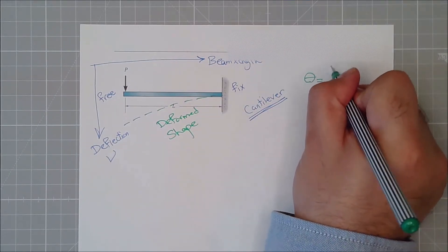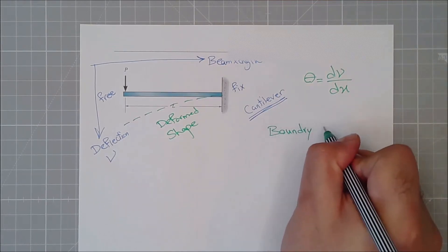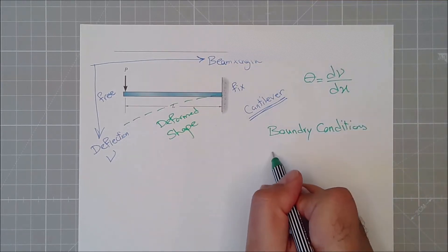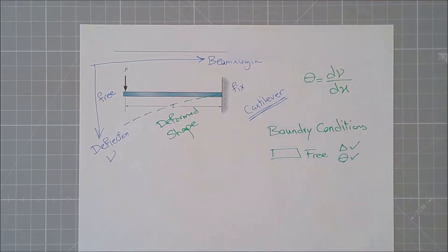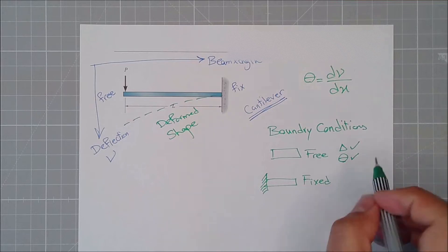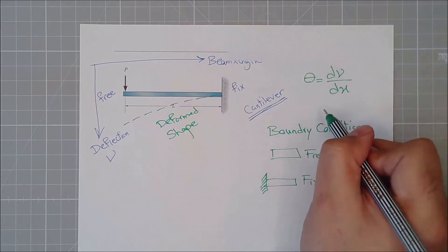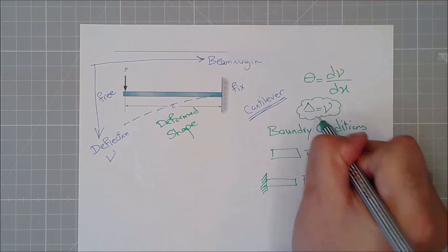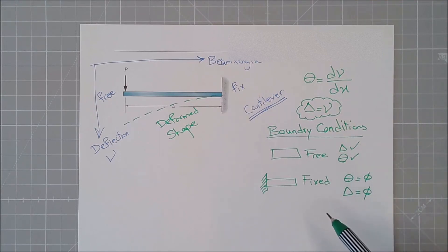Let's remember that theta is the slope, and let's write the boundary conditions. At the free end there will be deflection and slope. At the fixed end, if you remember, there won't be any slope and there won't be any deflection. Deflection and slope are just symbols — we can use delta. These boundary conditions help us find the constants A and B.